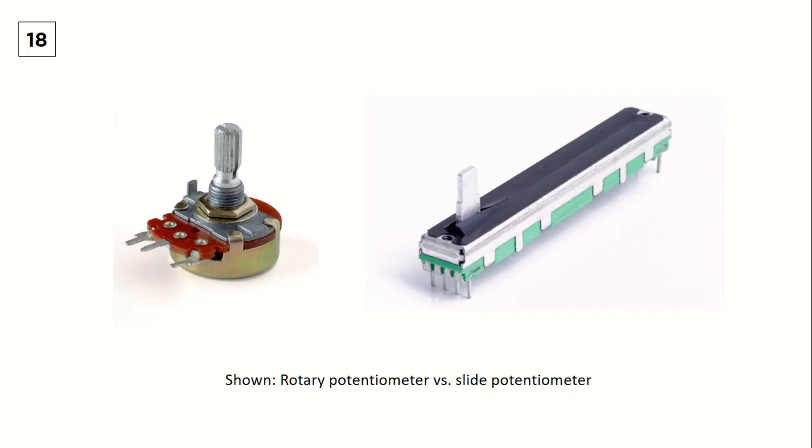Potentiometer is another type of resistor that can give variable resistance. This is made possible by a knob that can be turned to increase and decrease the resistance offered by the device.